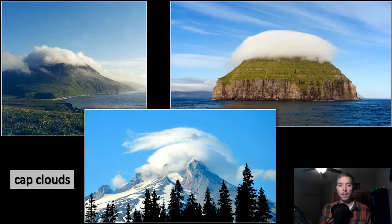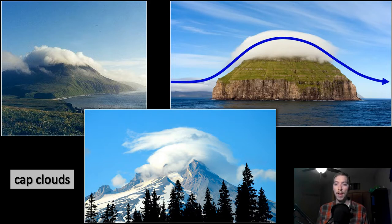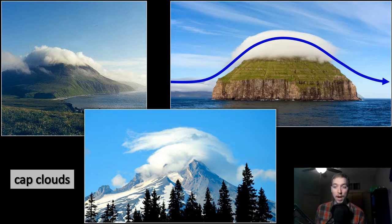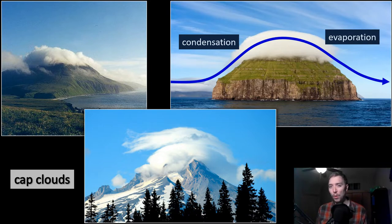Because of these processes we can get cap clouds, also called pileus clouds. These are stationary orographic clouds that form over the peak of a mountain when moist air is forced upward and over. As air is forced up the windward slope, condensation occurs; as it flows over the top, these clouds form directly over the mountain with a characteristic dome shape. On the windward side you have condensation; on the leeward side you have evaporation, and the cloud gets wispier.